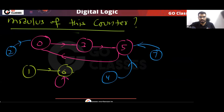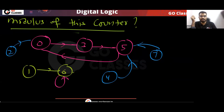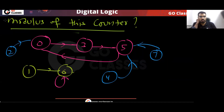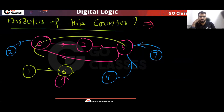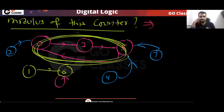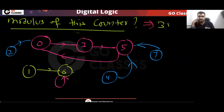Does the modulus depend on the initial state? For example, if the initial state is 7, what is the modulus of the counter? The modulus of this counter is simply the loop — that loop has 3 states, so the modulus is 3.